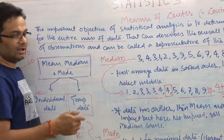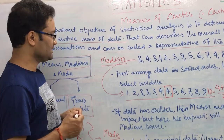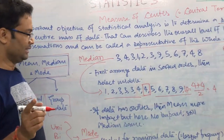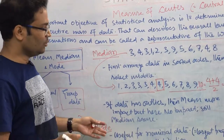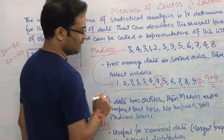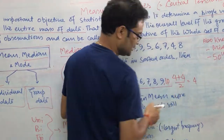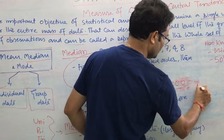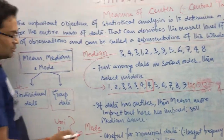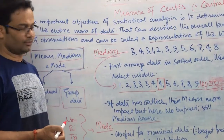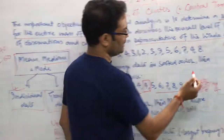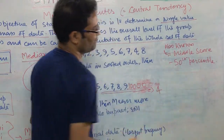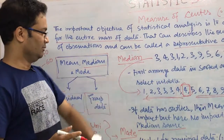When should I use the median? As I said in the mean case, if data has an outlier, the mean is greatly affected — we calculated that. But in the case of median, there is no impact of the outlier. Even if instead of 10 I have 1000 or 10,000, the median remains the same — no impact. This median score is also called the 50th percentile.